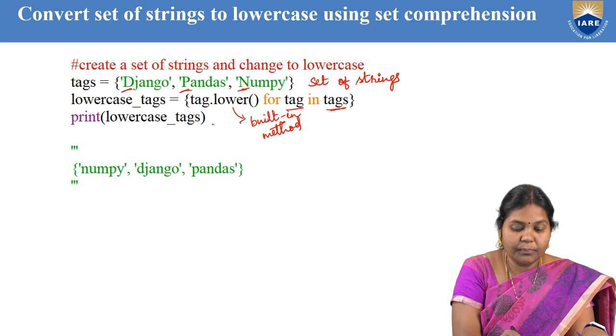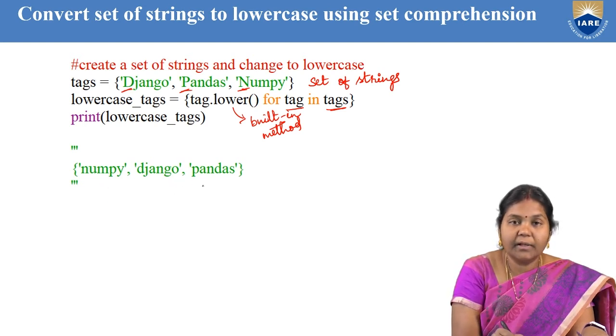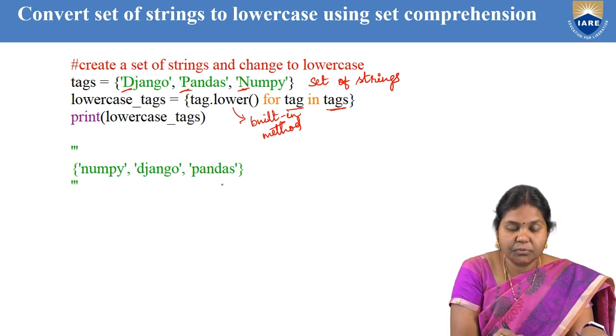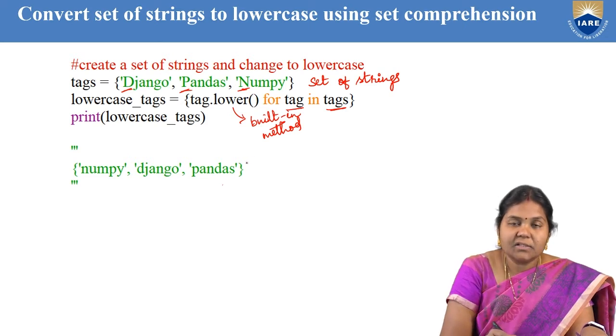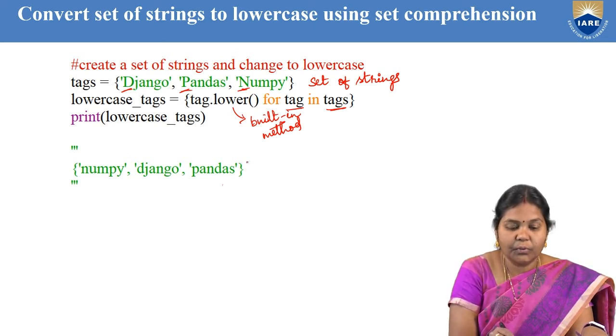When you print it, you can see the output as numpy, django, and pandas are in lowercase. The strings which were in the set are now converted into lowercase.